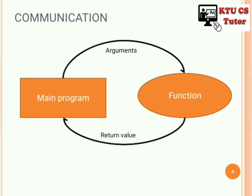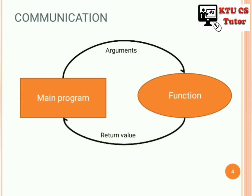Communication between the main program and functions happens by passing values. Whenever we send some values from the main program to the function, these are known as arguments. Arguments are the values transferred from the main program to the function. Whatever values pass from the function back to the main program are known as return values — the values given from the function to the main program.